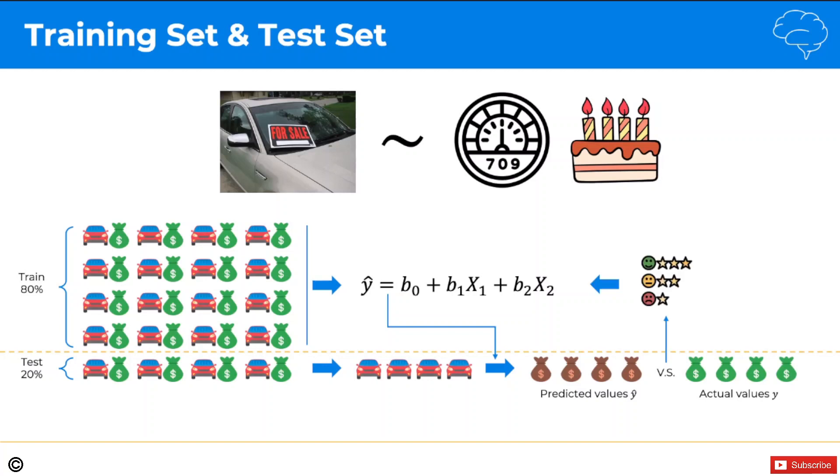And so from that, we can evaluate our model. Is it doing a good job? Is it doing a not so good job? And do we need to improve it? And that's how we split a training set and a test set, and that's why it's important to do that.